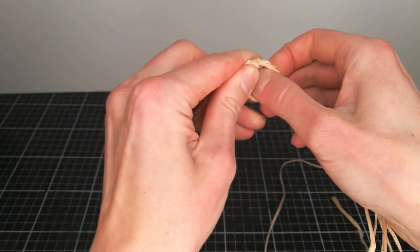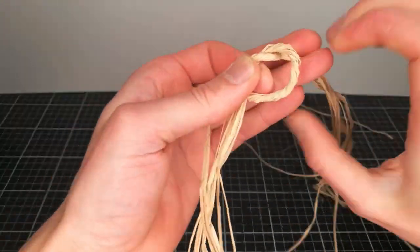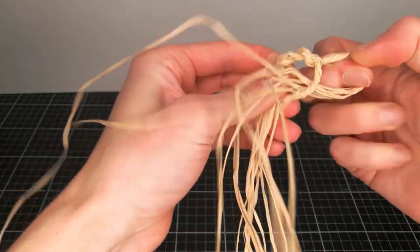And while continuing to twist the bundle, lay it around the previous turn, but in the opposite direction that you twist.